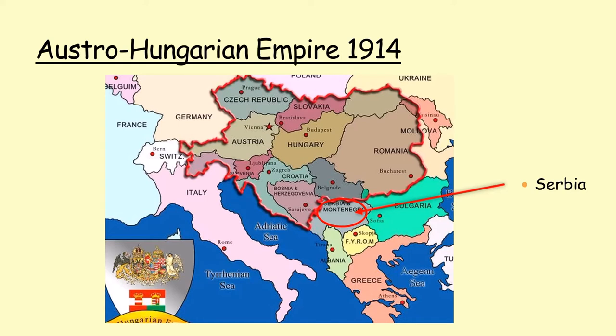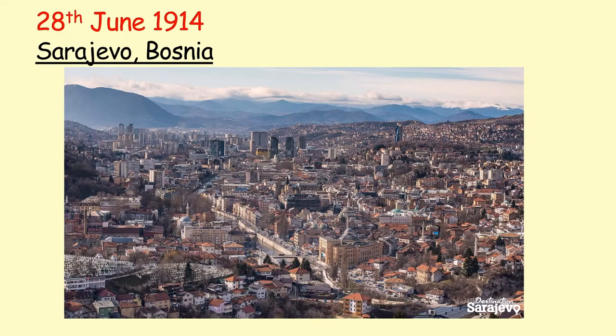The Austro-Hungarian Empire, as you can see, was quite large in Europe, with lots of different countries within it. One we are focusing on today is Bosnia, which you should be able to see towards the south, with its capital city Sarajevo. Right next to that part of the Austro-Hungarian Empire was the country of Serbia, which I've circled. So — Bosnia within the Austrian Empire, and Serbia. All of this event takes place on the 28th of June 1914 in the city of Sarajevo, Bosnia.